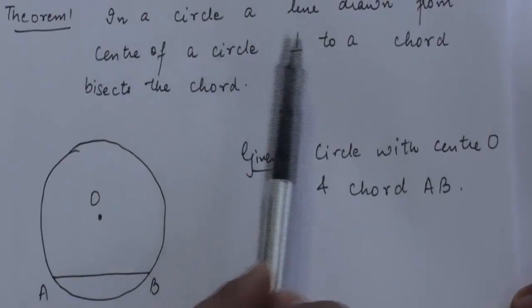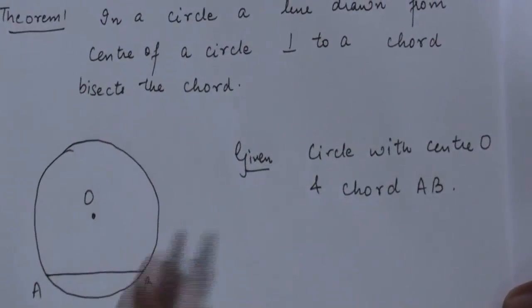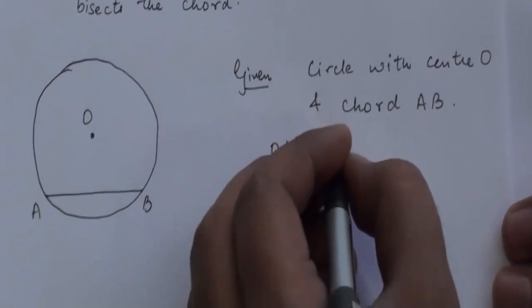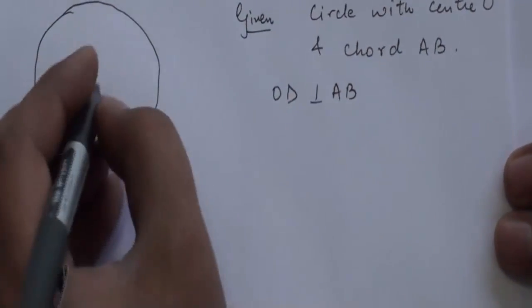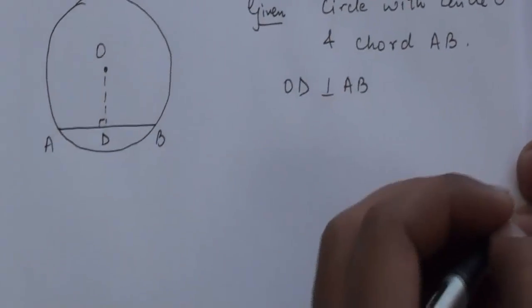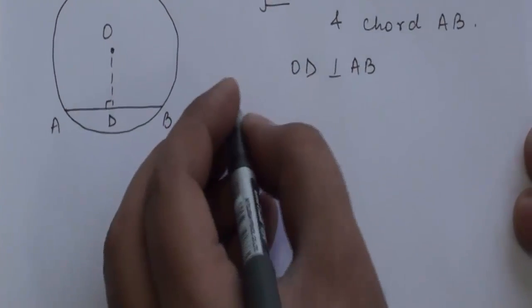A line drawn from the center of a circle perpendicular to a chord. What do we mean by this? OD is perpendicular to AB. We draw a perpendicular D. OD is perpendicular to AB.